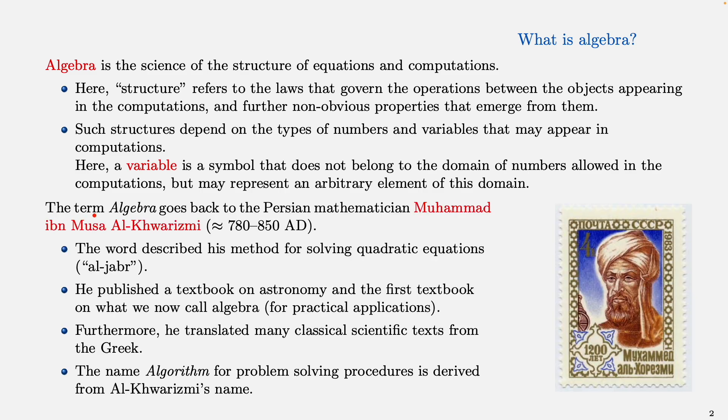The term algebra goes back to the Persian mathematician Muhammad ibn Musa al-Khwarizmi in the 8th to 9th century and it actually comes from his method for solving quadratic equations, al-jabr. And among his achievements are a textbook on astronomy and the first known textbook on what we nowadays call algebra.